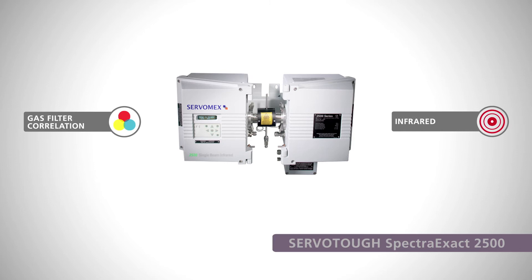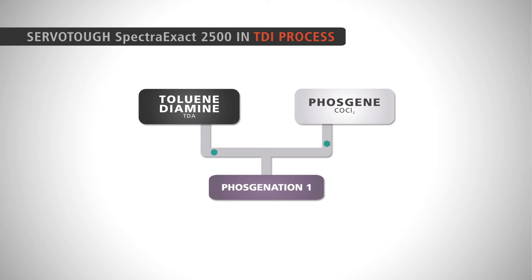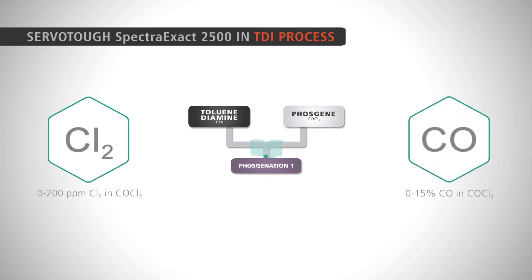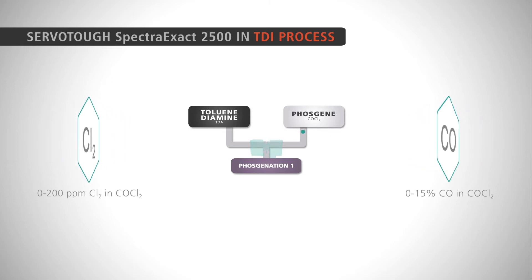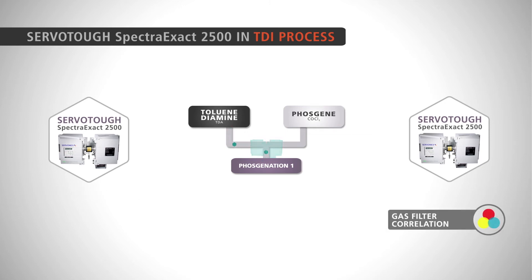It is ideal for the wide range of measurements needed for the harsh process conditions of TDI production. To create TDI, the toluene diamine is treated with phosgene. Spectra Exact 2500 analyzers make quality and process control measurements of parts-per-million chlorine and percentage carbon monoxide in the phosgene background. Carbon monoxide is affected by phosgene cross-sensitivity, but this is avoided using the Spectra Exact 2500 gas filter correlation technology, which ensures accurate analysis of carbon monoxide in complex background matrices.